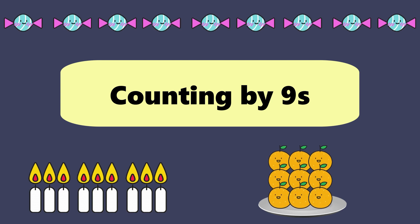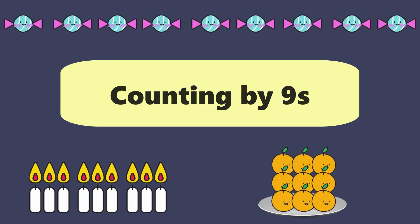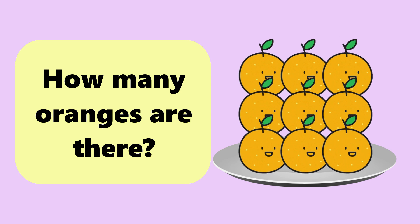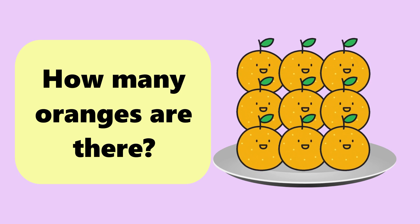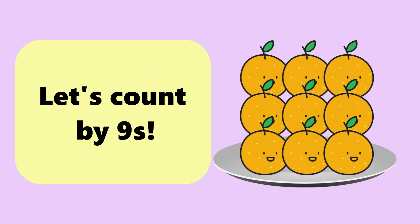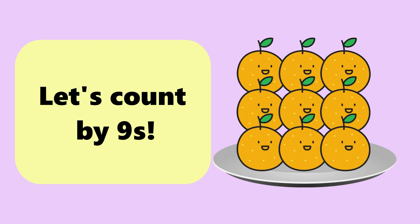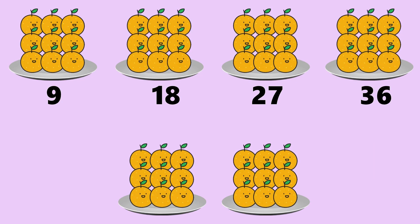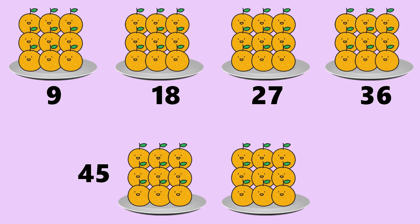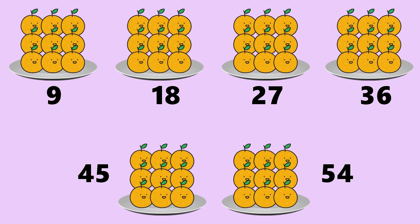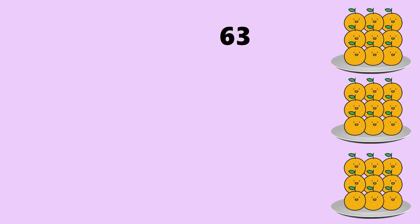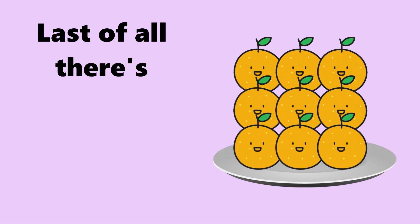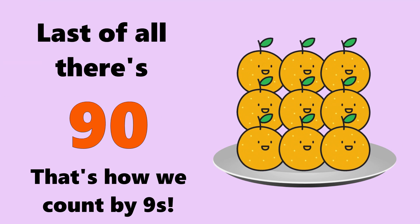Counting by nines. How many oranges are there? Let's count by nine. Nine and eighteen, twenty-seven, thirty-six, forty-five and fifty-four, sixty-three and seventy-two, then that's eighty-one, and last of all, there's ninety. That's how we count by nines.